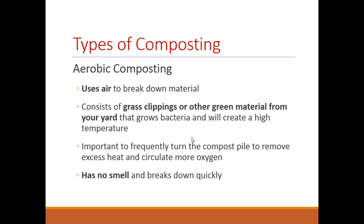The first type of composting is aerobic composting, which is the most familiar. This uses air to break down materials such as grass clippings and other green materials, which grows bacteria and creates high temperatures. It is important to frequently turn the compost pile to remove excess heat and allow more oxygen to circulate. The good thing about aerobic composting is that it does not produce any smell and it breaks down very quickly.